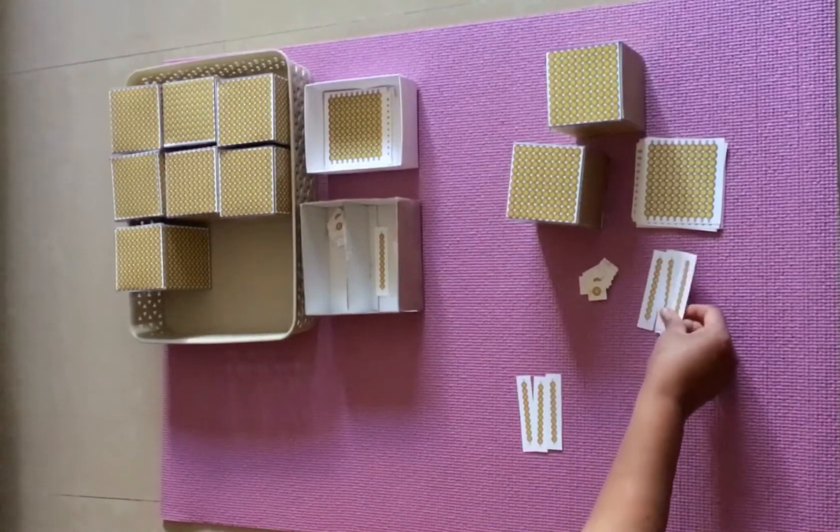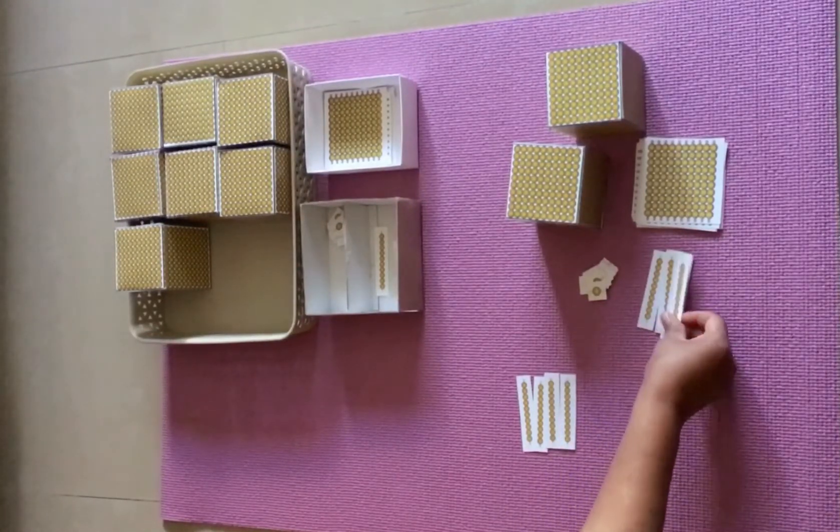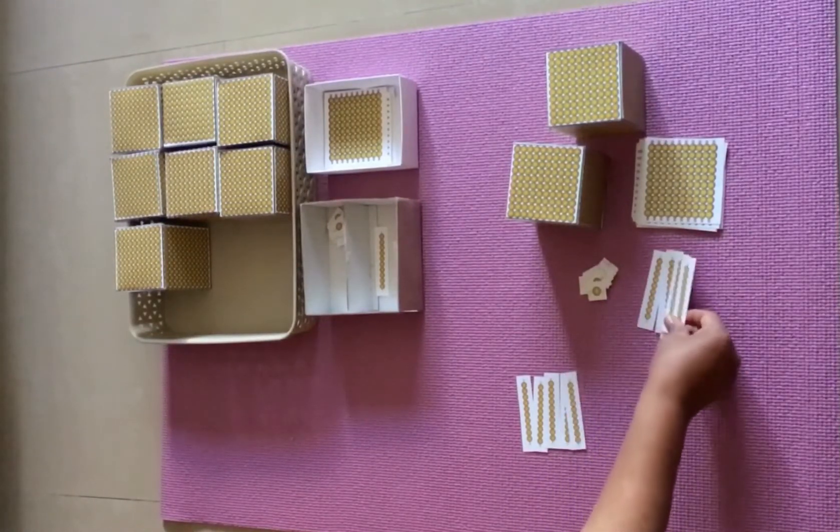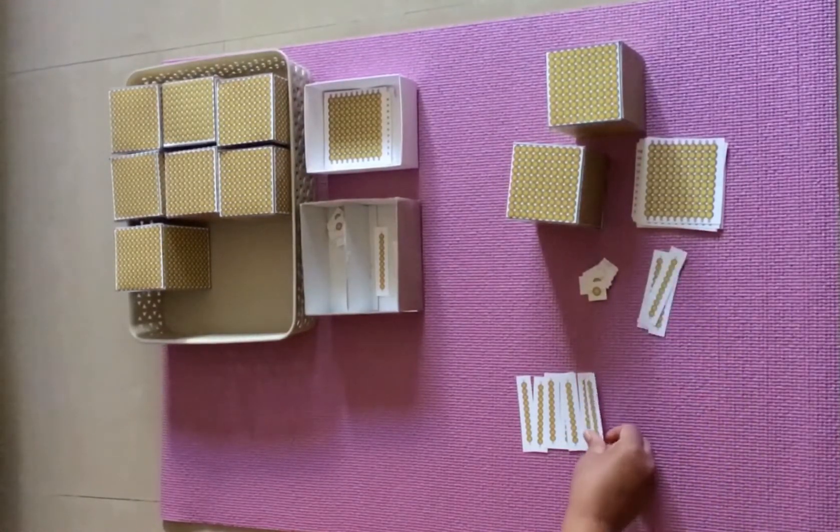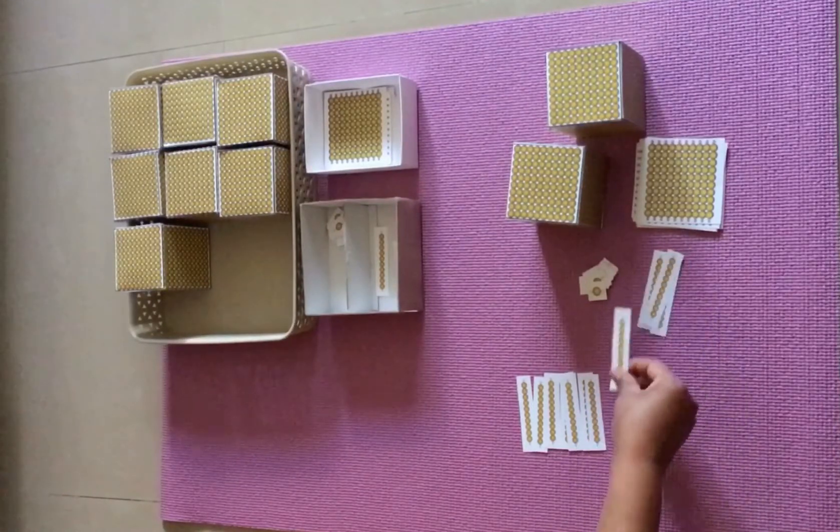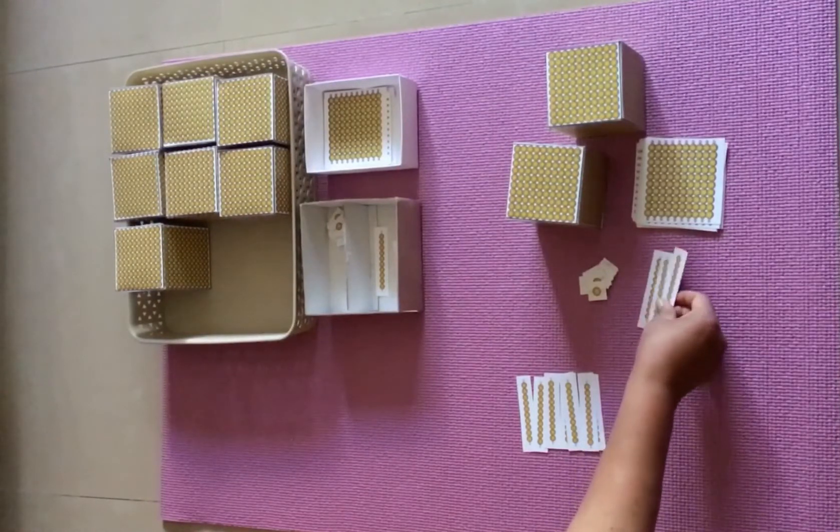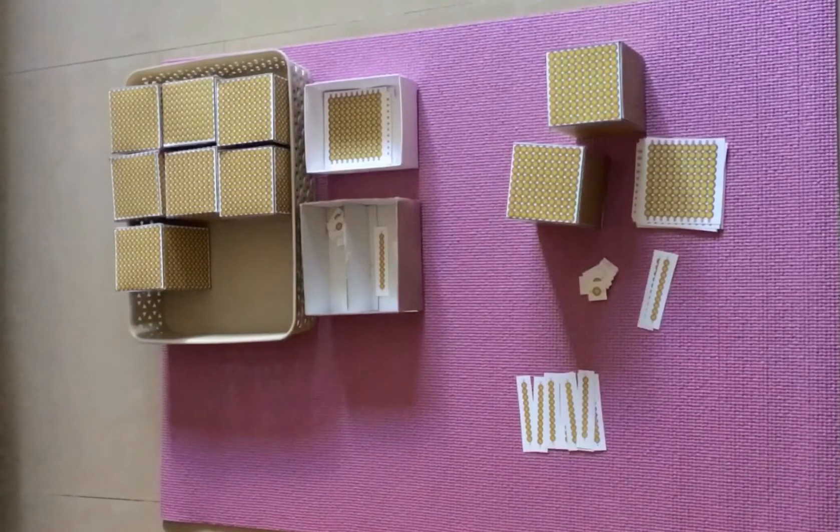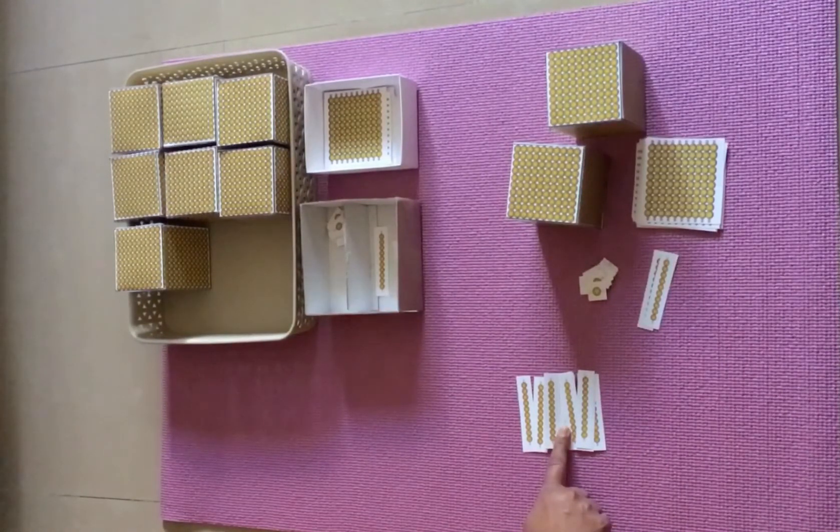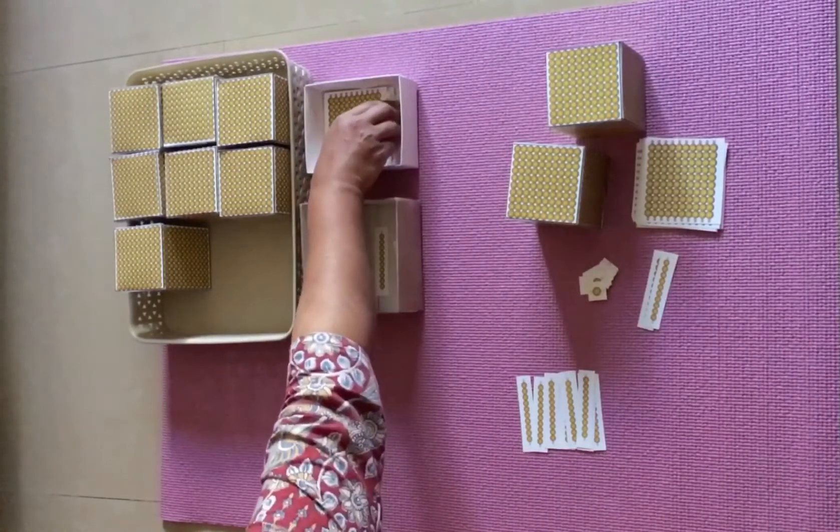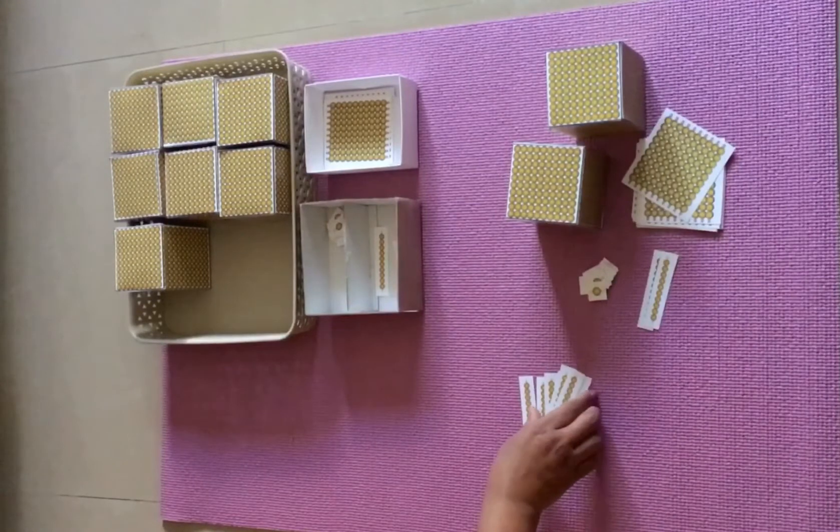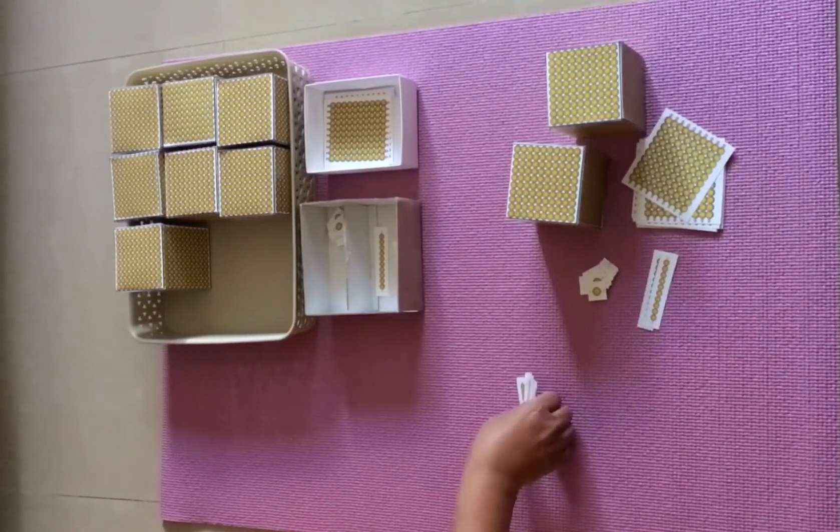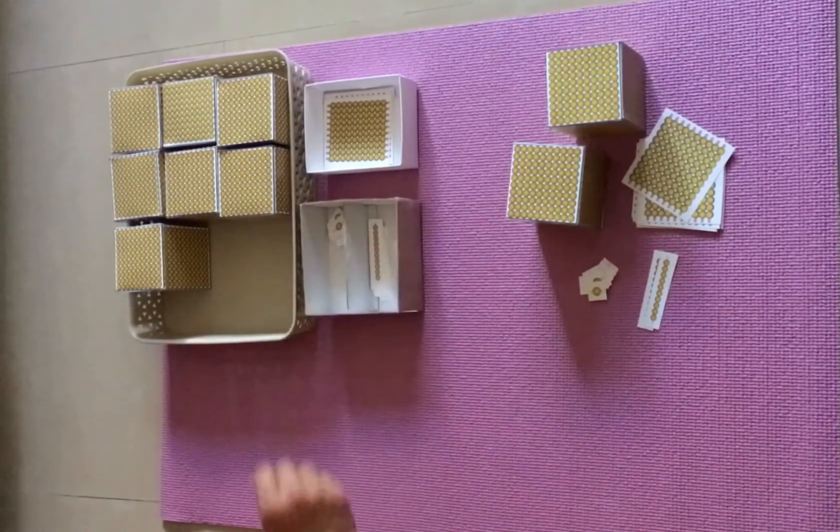3 tens, 4 tens, 5 tens, 6 tens, 7 tens, 8 tens, 9 tens, 10 tens. 10 tens we call it as 100. So we need to change 10 tens into 100. Take out 100 and keep the counted bars of tens into the box.